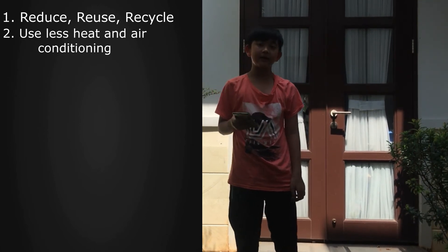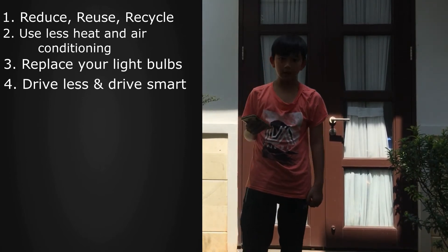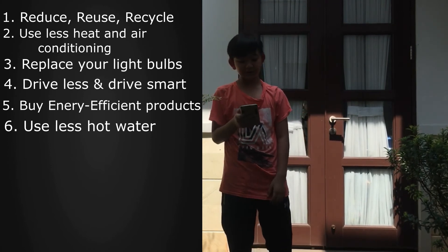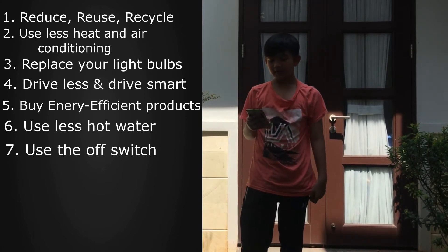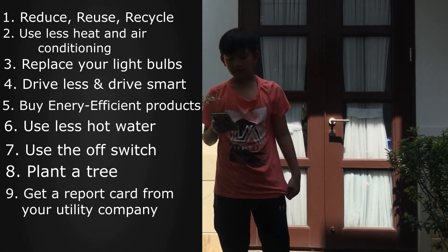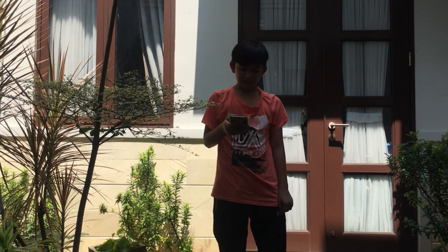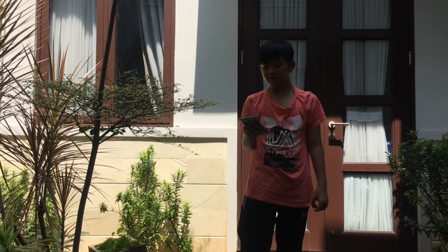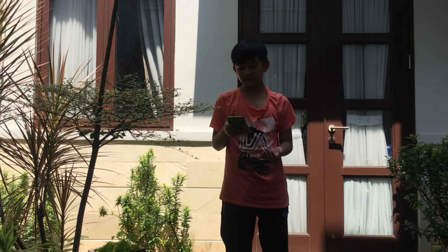Number 2 is to use less heat and air conditioning. Number 3 is to replace your light bulbs. Number 4 is to drive less and drive smart. Number 5 is to buy energy-efficient products. Number 6 is to use less hot water. Number 7 is to use the off switch. Number 8 is to plant a tree. Number 9 is to get a report from your utility company. And number 10 is to encourage others to conserve. These ten steps will take you a long way towards reducing your energy use and saving you money. Less energy use means less dependence on the fossil fuels that create greenhouse gases and contribute to global warming.